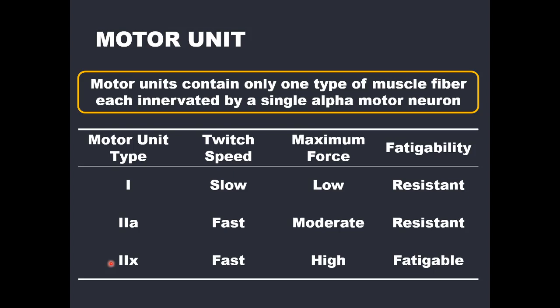An important point: depending on the muscle, the distribution of motor unit types may differ. Some muscles have a higher percentage of type 1s versus type 2s, while others are the opposite. For example, the triceps brachii and the rectus femoris are predominantly type 2s. On the other hand, the soleus, one of the calf muscles, is known to be predominantly type 1. Keep in mind that the distribution of motor unit types varies quite a bit from one individual to another.